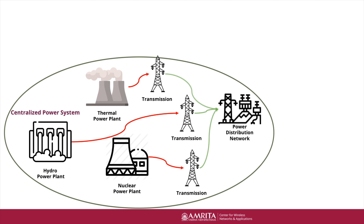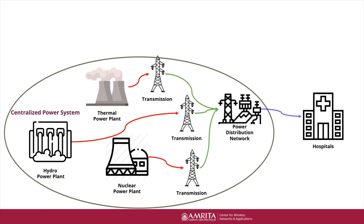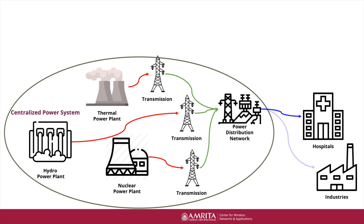Before I answer what a microgrid is, I felt it would help to revisit our understanding of what a power grid is. A power grid is basically a network of interconnected power lines and associated equipment used to deliver electricity to a group of loads — which we typically call consumers. The power grid is divided into three sections: generation, transmission, and distribution. Generation usually consists of power generation plants which are either fossil fuel-based, nuclear, hydro, or renewable energy-based.